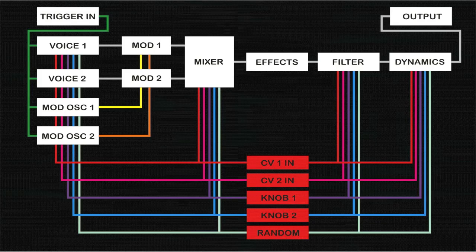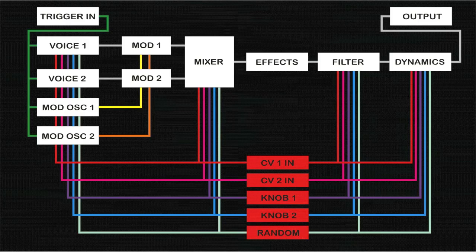Each modulation destination also allows you to define the polarity and amount of modulation to be applied to that particular parameter. There are a total of 9 different random function generators, where one is dedicated to each modulation destination.